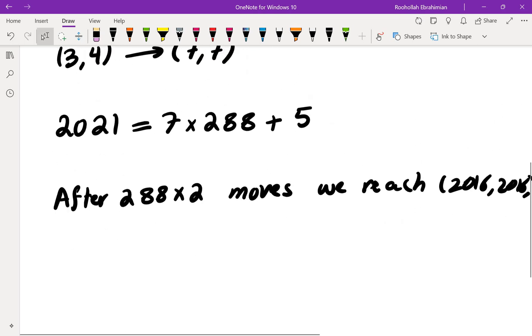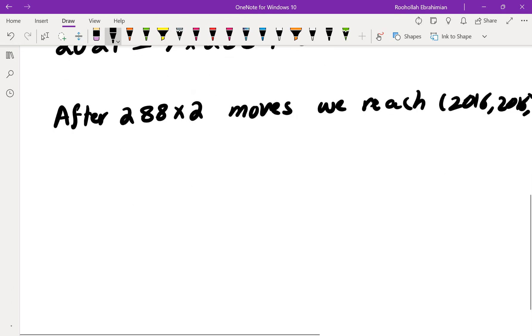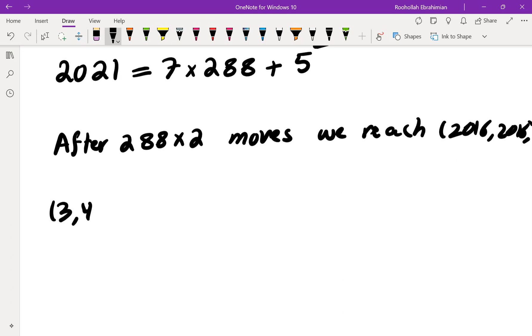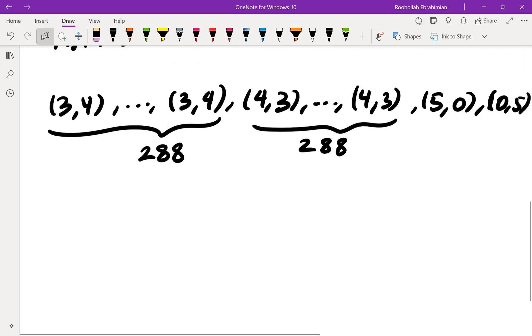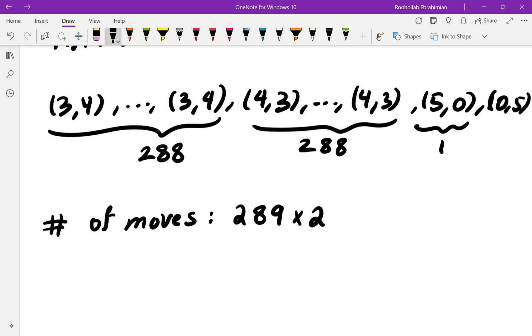At that point we need to move 5 units to the right and 5 units up. So we could do (3, 4) 288 times, then (4, 3) 288 times, then (5, 0), and then (0, 5). So the number of moves we're making is 289 times 2 - that's 289 times 2, which is 578. Now we can get to (2021, 2021) with 578 moves.